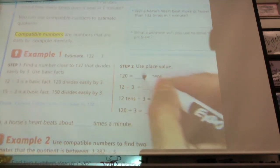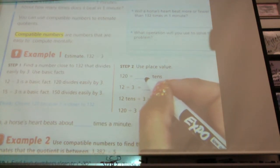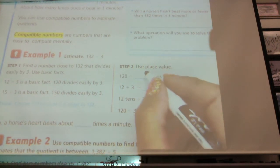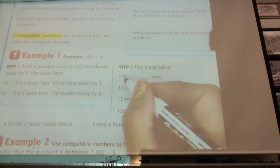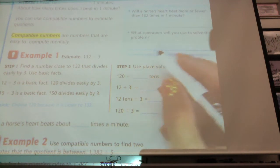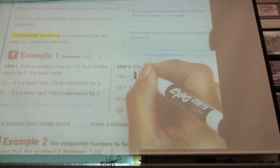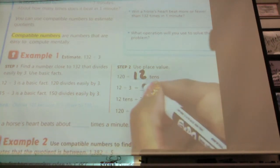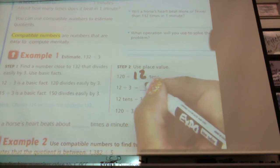120 is how many tens? I want you to think about the answer before you say a number. Eyes on me when you have an answer. 120 is how many tens? Okay, how many tens? 12. It is 12 tens. 12 divided by 3 equals what number? 4.